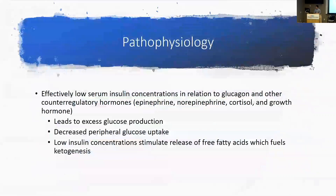In DKA, you have an effectively low serum insulin concentration relative to glucagon and other counter-regulatory hormones. I say effectively low because it can be either absolutely low, as in type 1 diabetes where there's inadequate production due to damage to pancreatic beta cells, or you can have resistance to insulin as seen in type 2 diabetes, where overall insulin levels are normal or high but cells aren't responding to it.